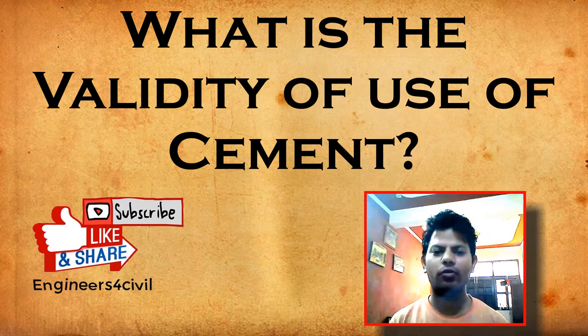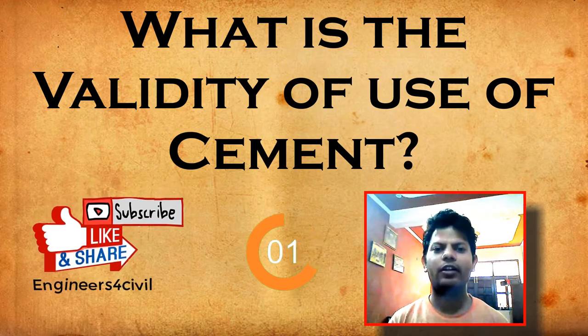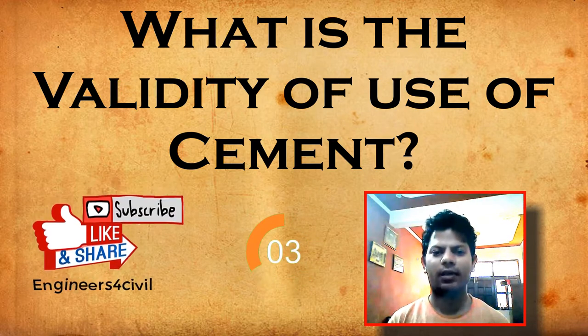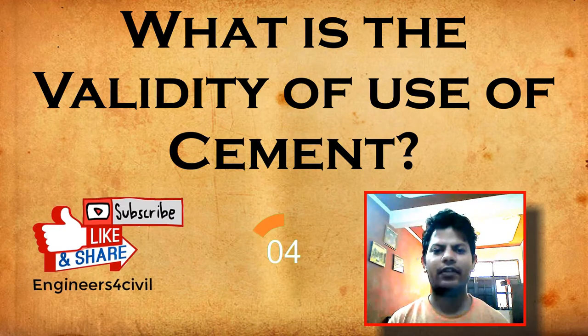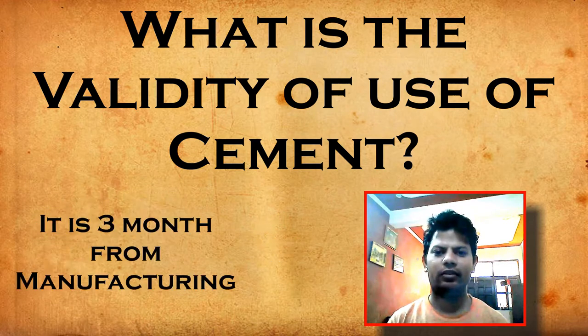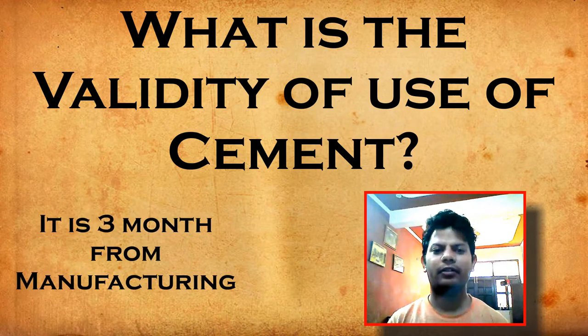What is the validity of used cement? Validity of used cement — you have five seconds. The correct answer is three months from the manufacturing date.